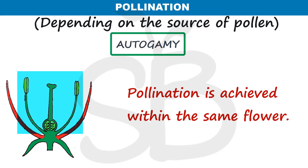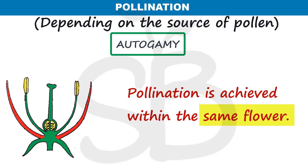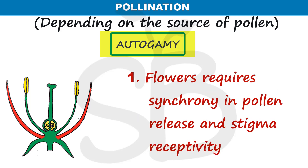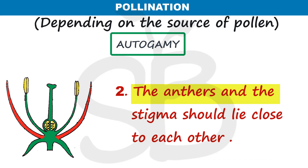In the textbook, we are going to discuss autogamy — that is, pollination is achieved within the same flower. For autogamy, there must be synchrony: the stigma receptivity and pollen grain release happen at the same time, and the anther and stigma should lie close to each other.